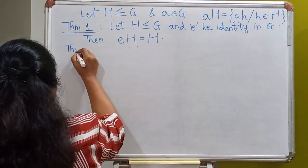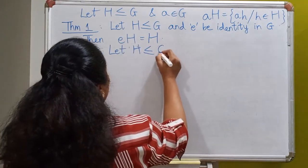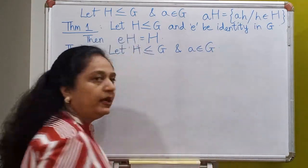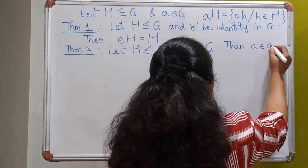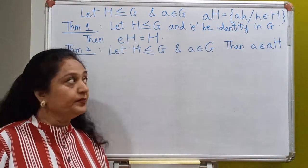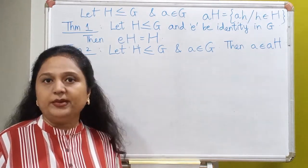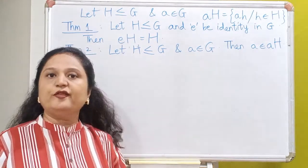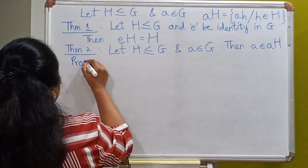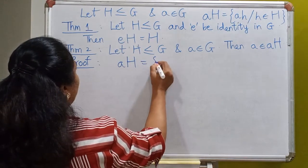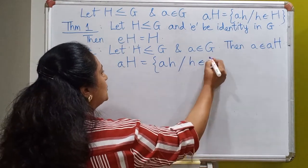So we look at Theorem 2. Let H be any subgroup of the group G and A be any element of the group. Then we will prove that A surely belongs to its own left coset AH. This tells us that the left coset can never be empty — it will at least contain the representative A. This is a very easy result to prove; you just have to look at the definition of the left coset AH.